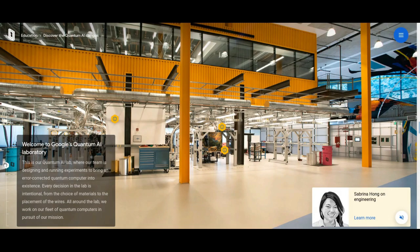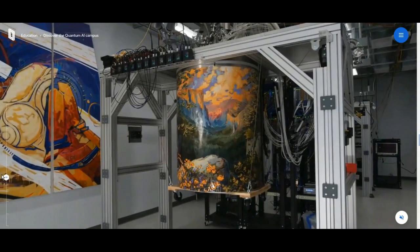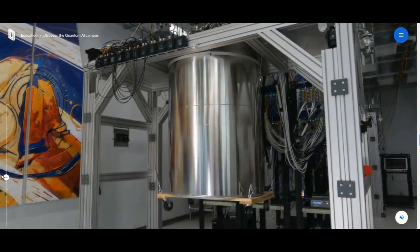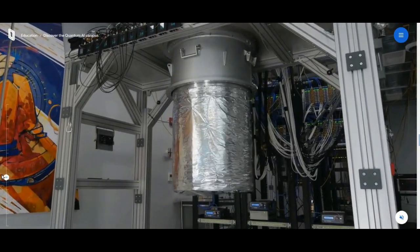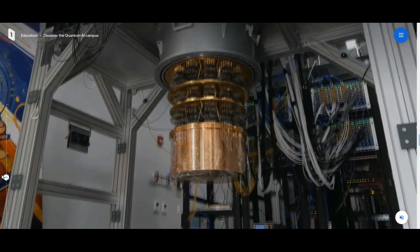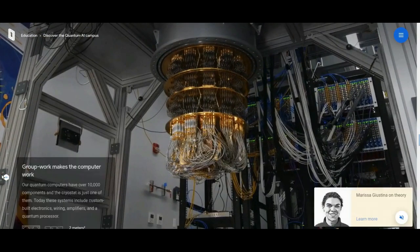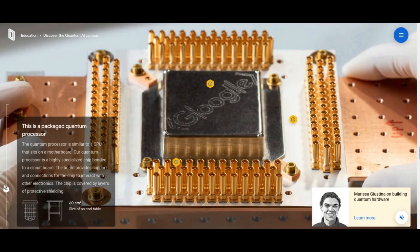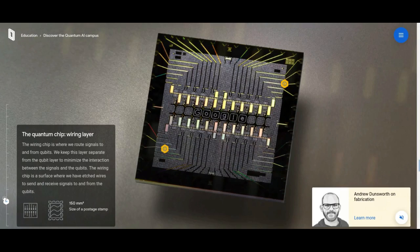Quantum computers use quantum bits, or qubits, which can be entangled in a complex superposition of states, naturally mirroring the complexity of molecules in the real world. With an error-corrected quantum computer, we'll be able to simulate how molecules behave and interact, so we can test and invent new chemical processes and new materials before investing in costly real-life prototypes.